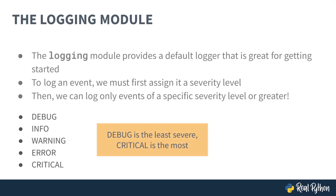There are five severity levels we can use by default: debug, info, warning, error, and critical. Debug is the least severe, and critical is the most. As we'll see, we can configure the logger to log only events marked as, say, warning or more severe, meaning that it will only log events marked as warning, error, or critical. Debug and info events won't be logged.